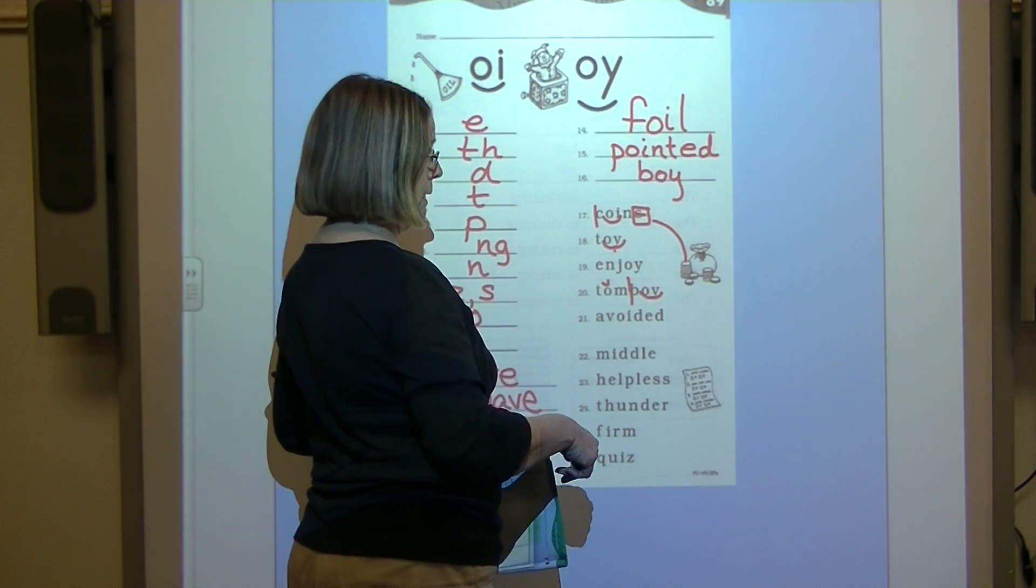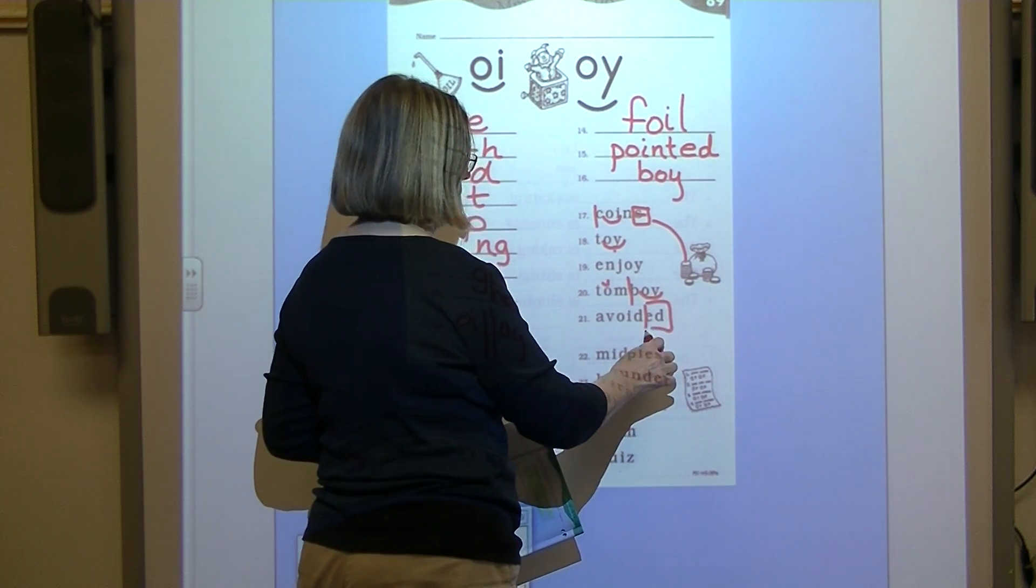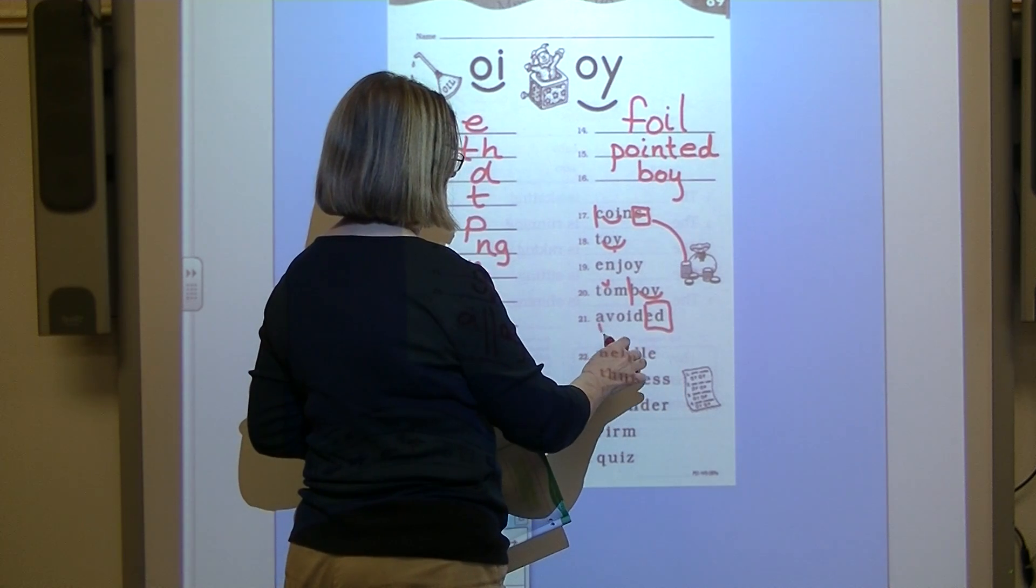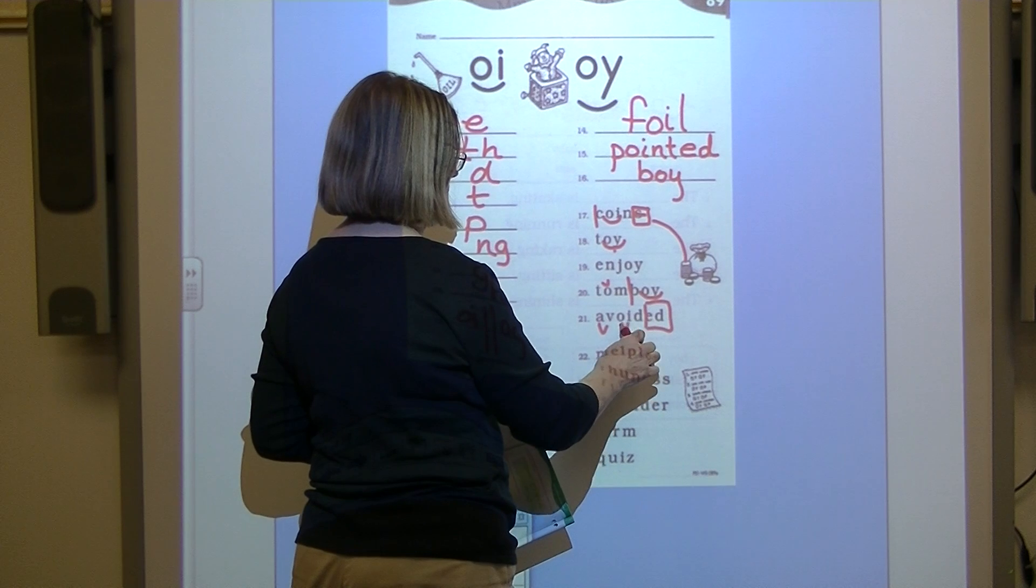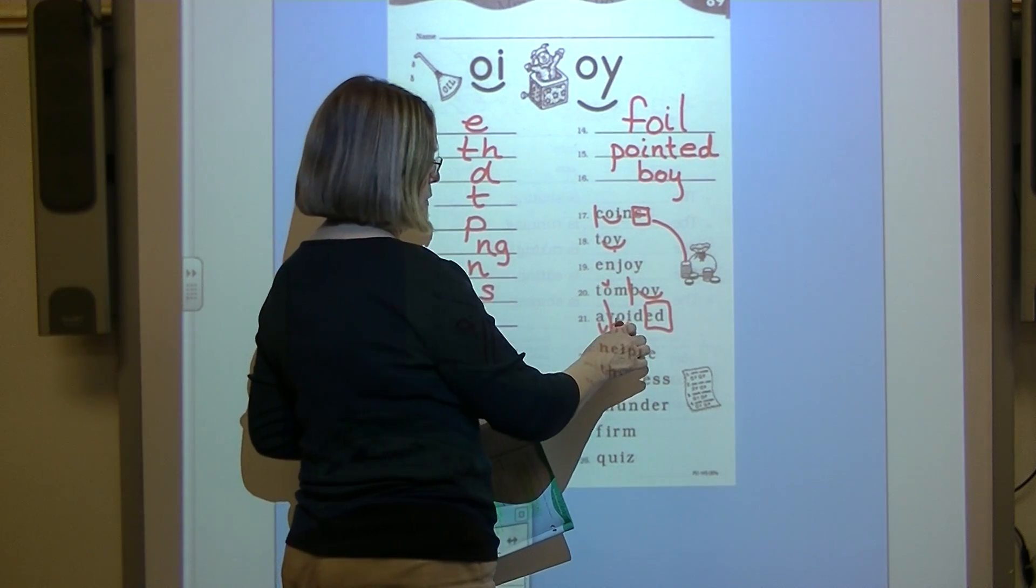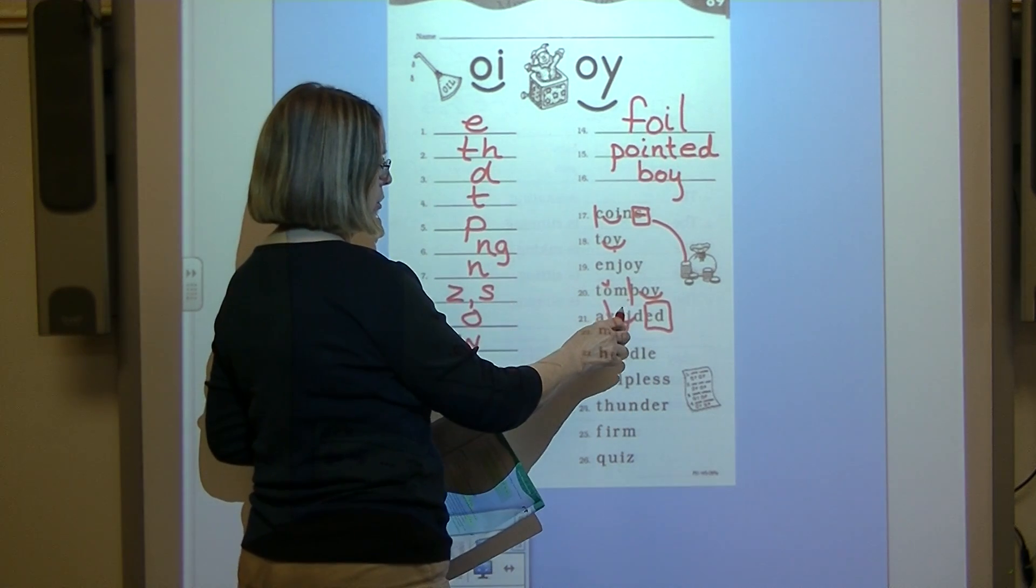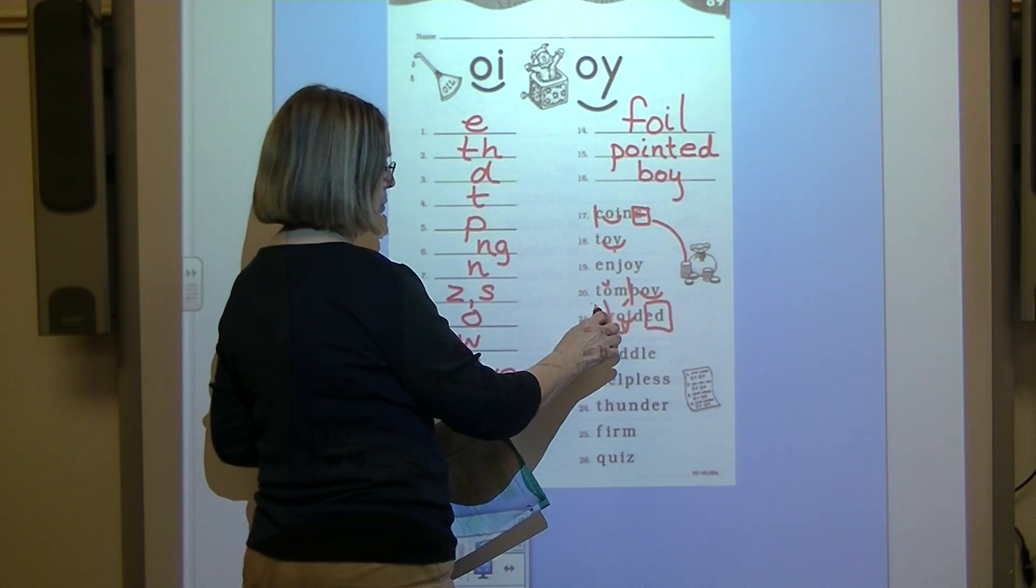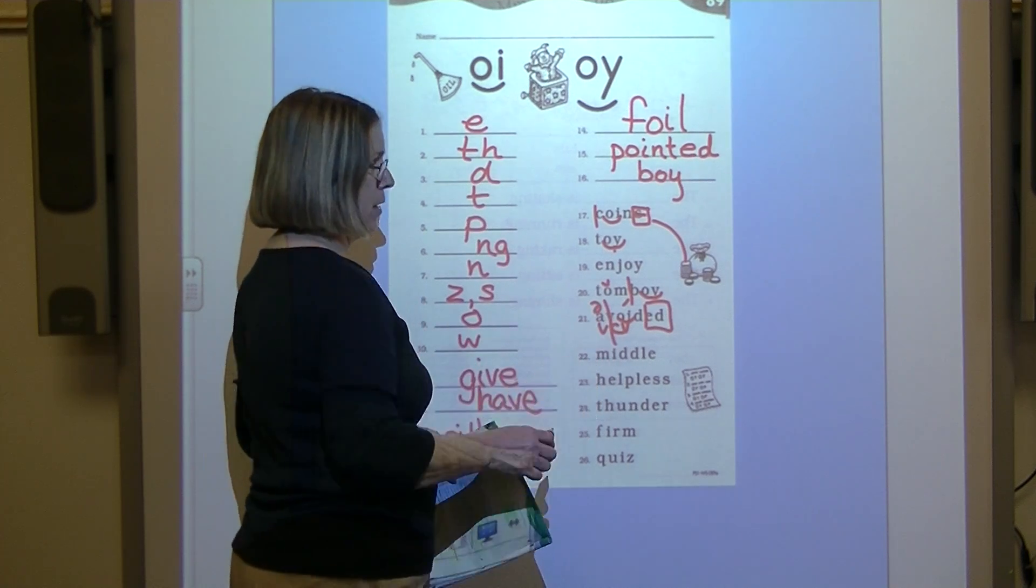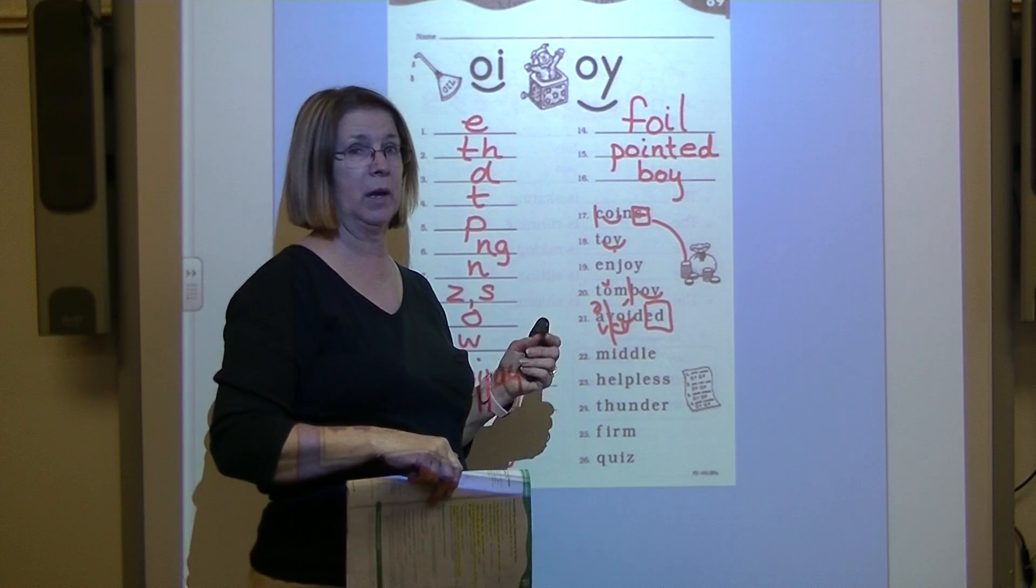And we coded this word a minute ago. This has suffix ed, so we put it in a box. That's a vowel, that's a vowel, that's a consonant. Divide it after the first vowel. Put an arc under diphthong oi. Put your accent mark here. We're going to put a schwa over the a because this is the unaccented syllable and a is in the syllable by itself.